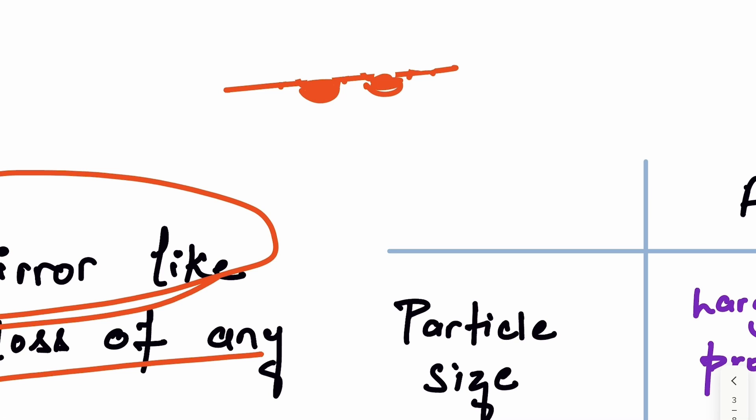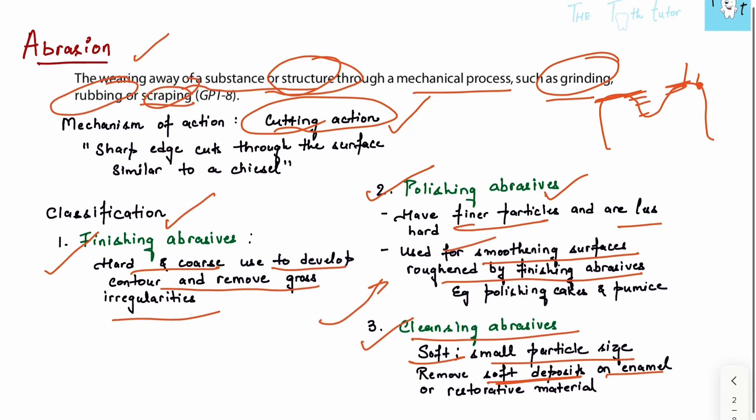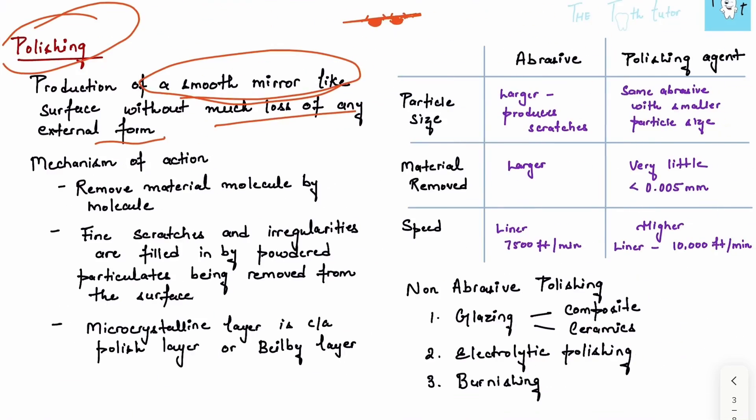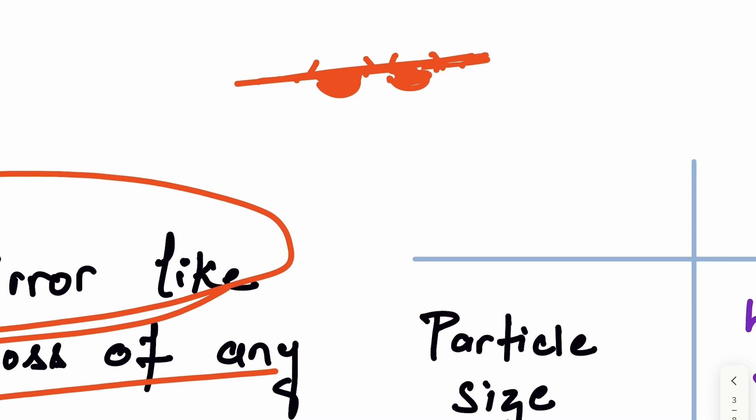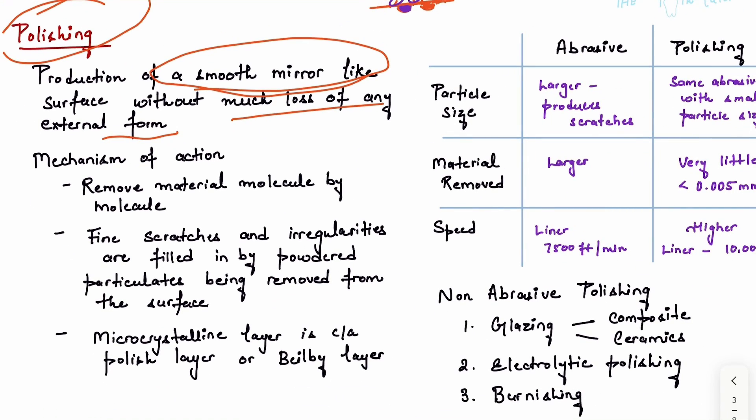This depression is filled using the debris that came out from these irregular structures, giving a very smooth mirror-like surface by removing these irregularities and also filling in the depressions we had. That's the difference between abrasion and polishing. Abrasion simply removes irregularities, but in polishing we're also filling in the gaps.